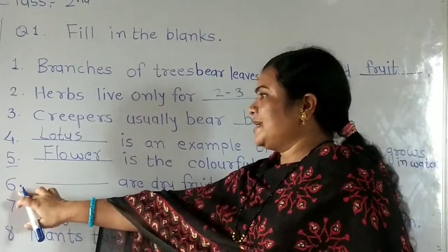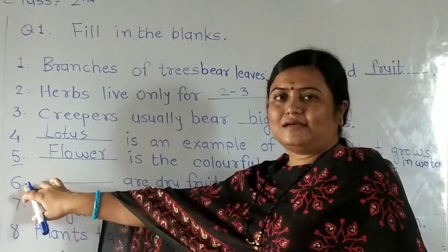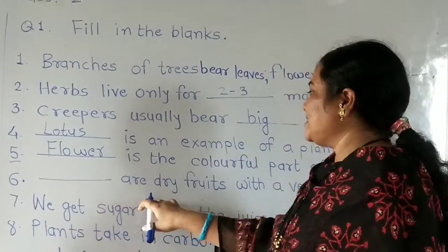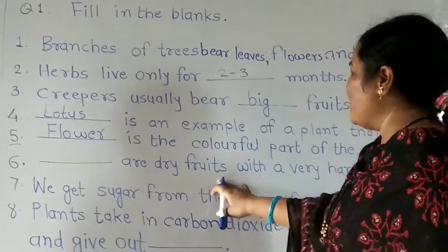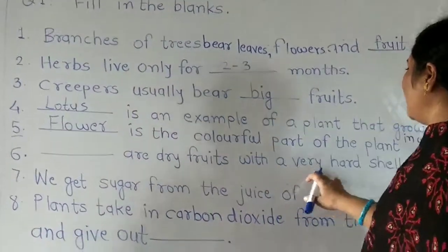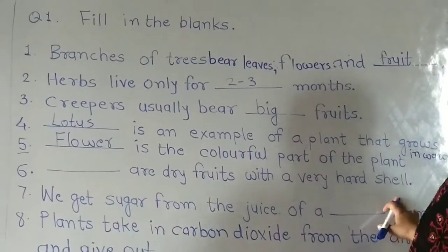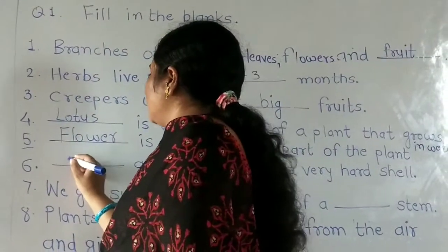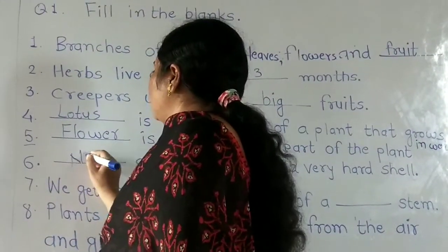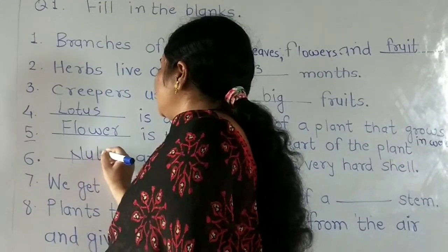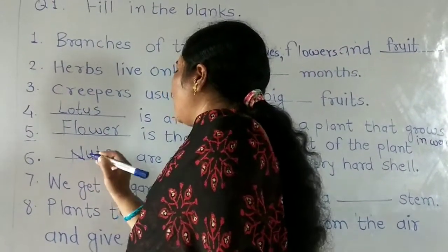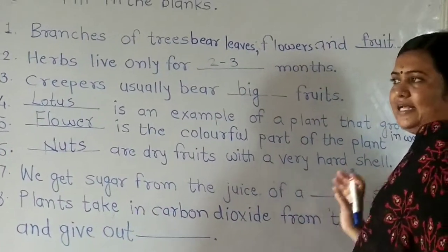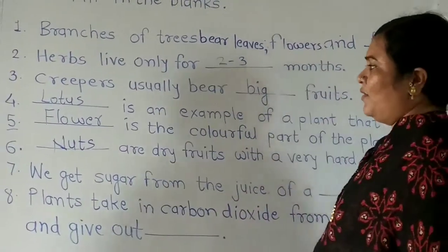Number 6: Dash dash are dry fruits with a very hard shape. The answer is nuts. Nuts are dry fruits with a very hard shape.